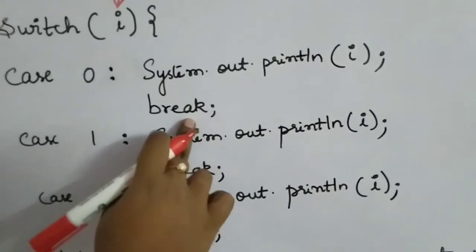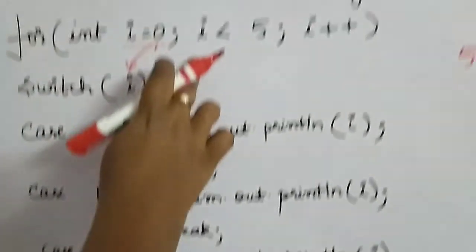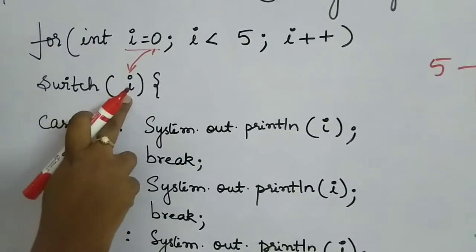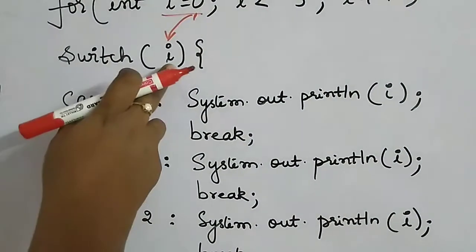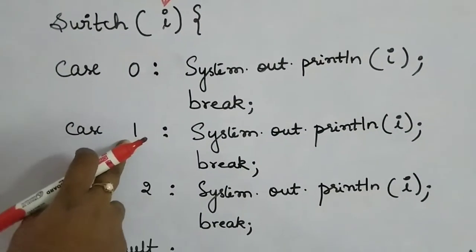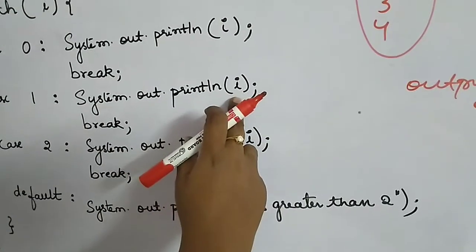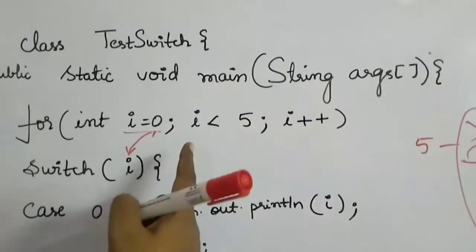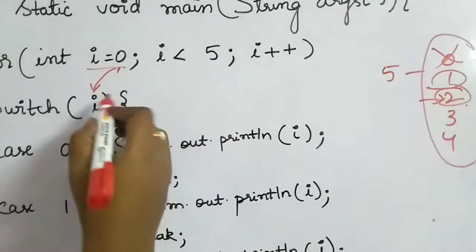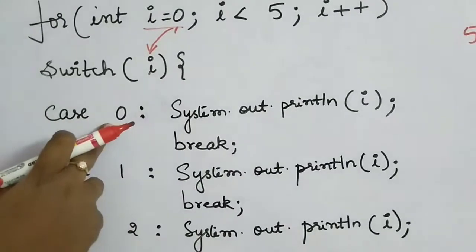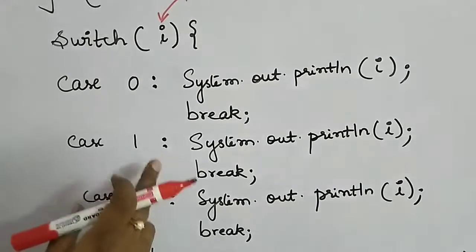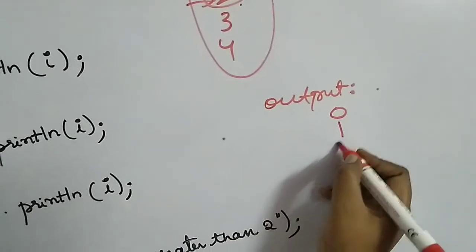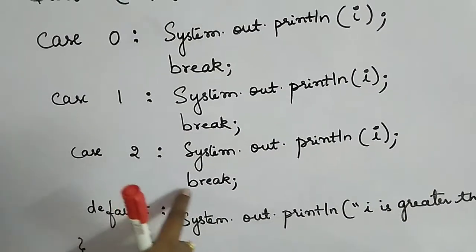After break, the loop moves to the next iteration where i equals one. It mismatches case zero, then matches case one, prints one, and the break exits the switch. In the next iteration, i equals two — mismatches zero and one, then matches two, prints two, and break exits the switch again.